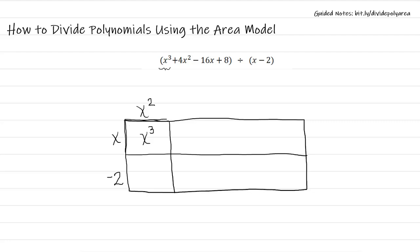Now that I know that this is x squared, I'm going to go down to this rectangle. So this is x squared, this is negative 2. If I multiply those together, I get negative 2x squared. So I've used this first term to get started.